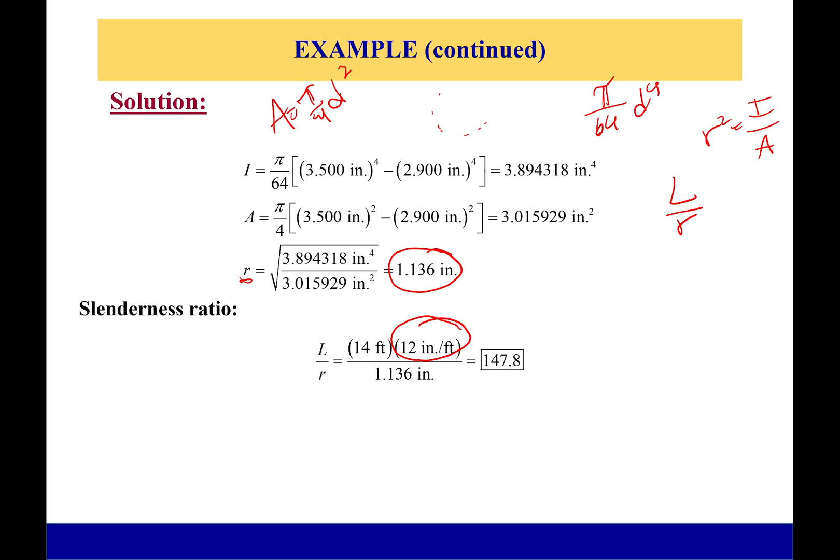Okay, so we have the slenderness ratio—that's great. Now let's find the critical buckling load. We're using this same equation right here. As a note, the equation has n squared in it, and we're just saying that n is equal to 1 because it didn't mention any supports.